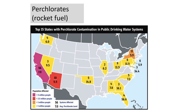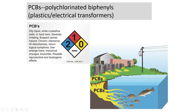Perchlorates are also a problem — essentially rocket fuel. These are the top 15 states with perchlorate contamination in public drinking water systems. PCBs — polychlorinated biphenyls — come from plastics and electric transformers. They're an oily liquid, very hazardous, and a suspected cancer hazard. If released, they can get into the water, as with electrical transformers releasing them into waterways.